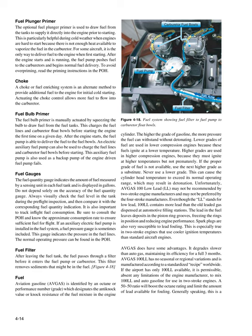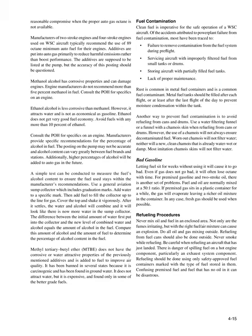Avgas 100 LL has some advantages: it degrades slower than autogas, maintaining its efficiency for a full three months, and has no seasonal or regional variations, manufactured to a standardized recipe worldwide. If the airport has only 100 LL available, it is permissible to mix 100 LL and auto gasoline for use in two-stroke engines — a 50:50 ratio will boost the octane rating and limit the amount of lead available for fouling. Manufacturers of two-stroke and four-stroke engines used on WSC aircraft typically recommend 89-octane minimum auto fuel. Additives in autogas are put in primarily to reduce harmful emissions. Engine manufacturers do not recommend more than 5% methanol in fuel, as methanol has corrosive properties and can damage engines.